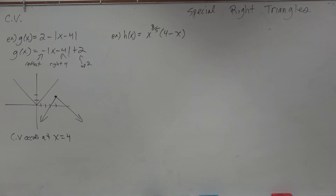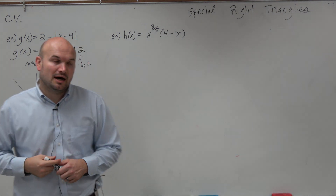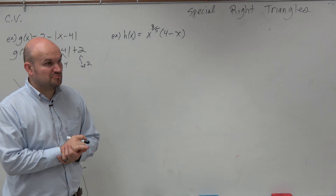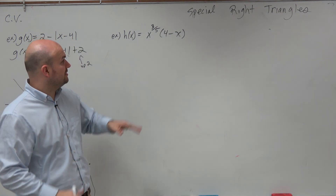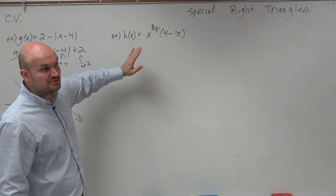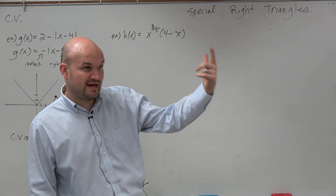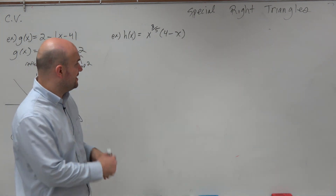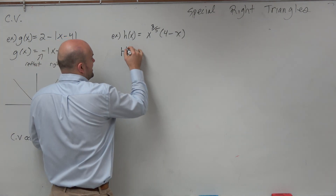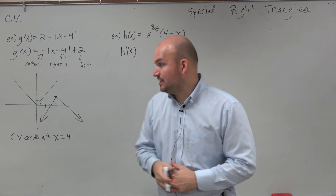I guess everybody just wanted to do the product rule. So again, if we're looking at this example, let's go ahead and figure out where to find the critical value. We want to take the derivative when the derivative is zero and when the derivative is undefined. So it looks like everybody at least did the product rule, so I'll do it that way.